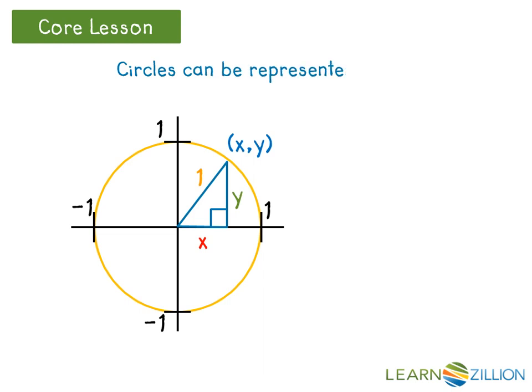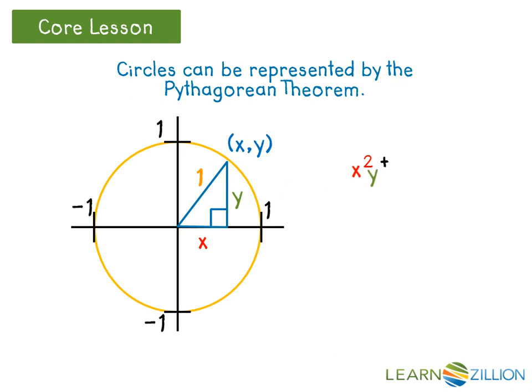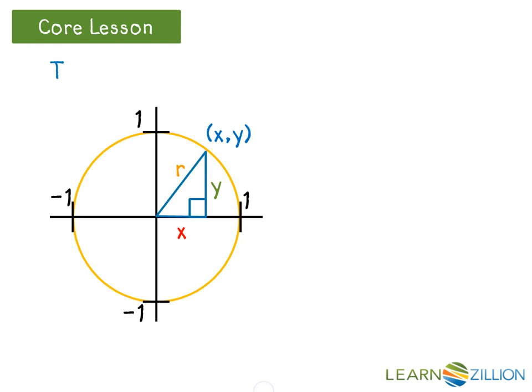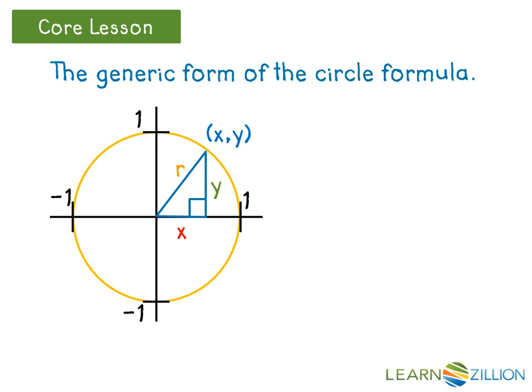Since the definition of a circle is the set of all points (x, y) that are the same distance from the center, and a right triangle's hypotenuse can always be created to connect those points to the origin, the Pythagorean Theorem can be used to represent all the points that make up a circle. In this case, we have x squared plus y squared equals 1 squared. A more generic form of the formula can be made when we realize that the 1 represents the radius of the circle and can therefore be replaced by the variable r, giving us x squared plus y squared equals r squared.